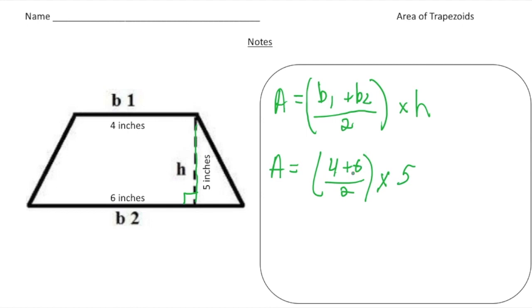So now all we need to do is simplify this expression. So four plus six is ten and ten divided by two is five and five times five gives us 25. So our area is going to be 25 square inches. And there's the answer.